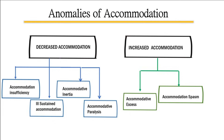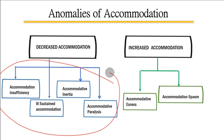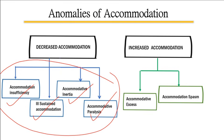Under pathologically decreased accommodation we have four accommodative anomalies: number one is accommodation insufficiency, number two is ill-sustained accommodation, then we have accommodative inertia and accommodative paralysis.